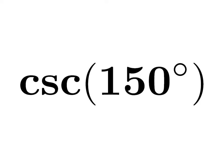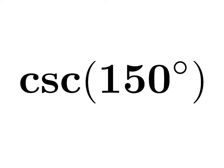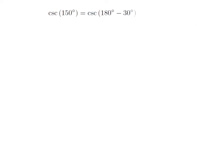In this video, we will learn to find the value of cosecant of 150 degrees. As 150 degrees is equal to 180 degrees minus 30 degrees, cosecant of 150 degrees is equal to cosecant of 180 degrees minus 30 degrees.